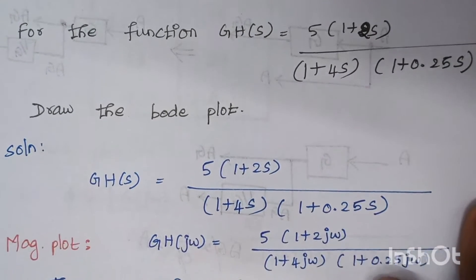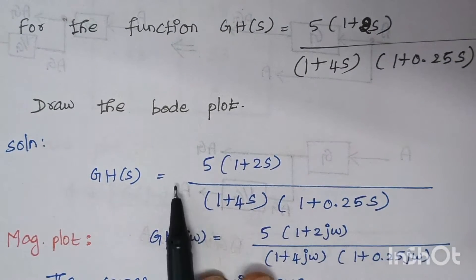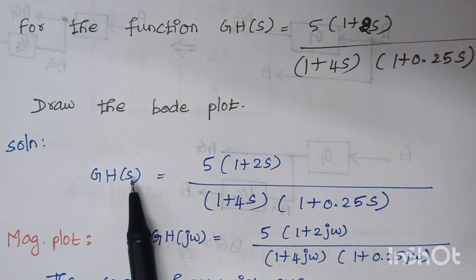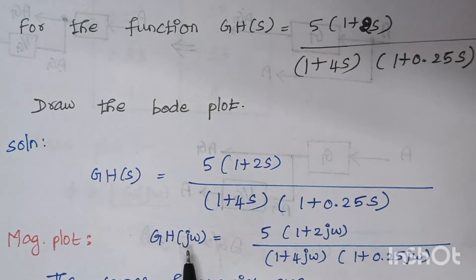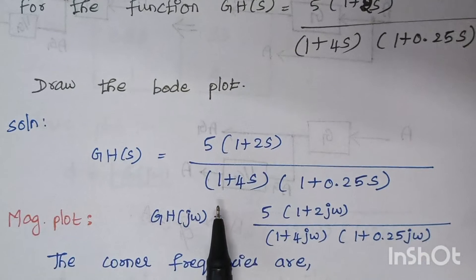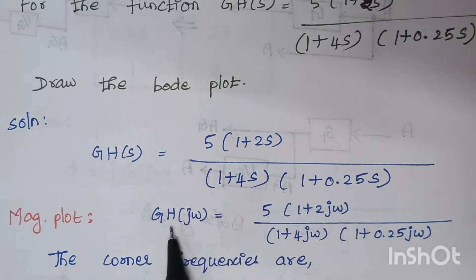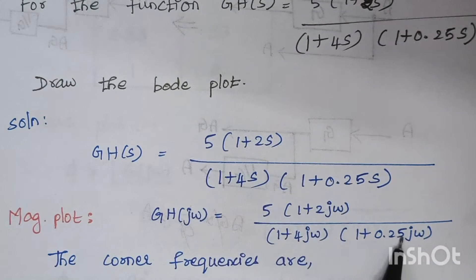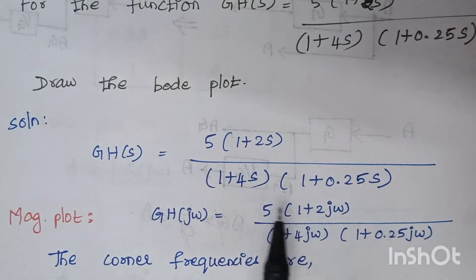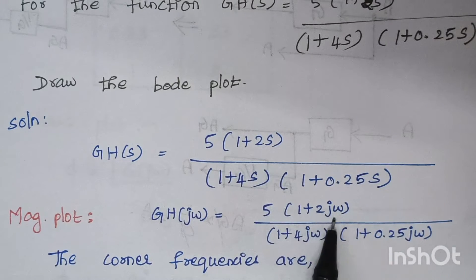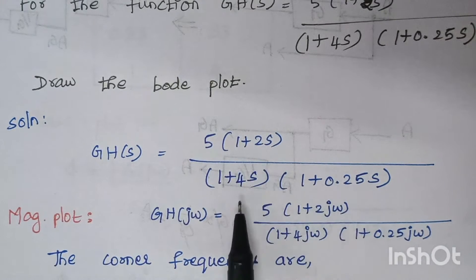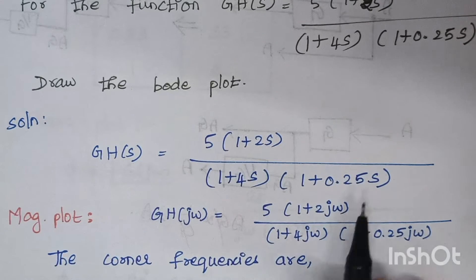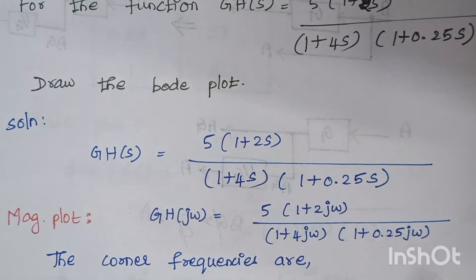The first step is to substitute the value of s as jω. When you substitute s = jω, the given expression gets modified: 1 plus 2s becomes 1 plus 2jω, 1 plus 4s becomes 1 plus 4jω, and likewise for the remaining expressions.